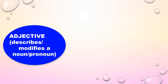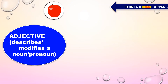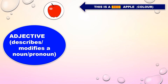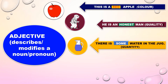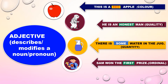Adjective is a word that describes or modifies a noun or pronoun. For example: this is a red apple — here the color red is the adjective. He is an honest man — here honest is the adjective, referring to the quality of a person. There is some water in the jug — here some is the adjective, referring to the quantity of the noun water. Sam won the first prize — here first is the adjective, referring to ordinal number.